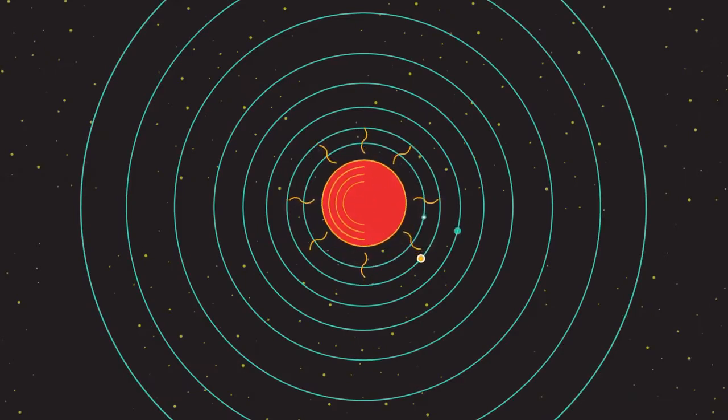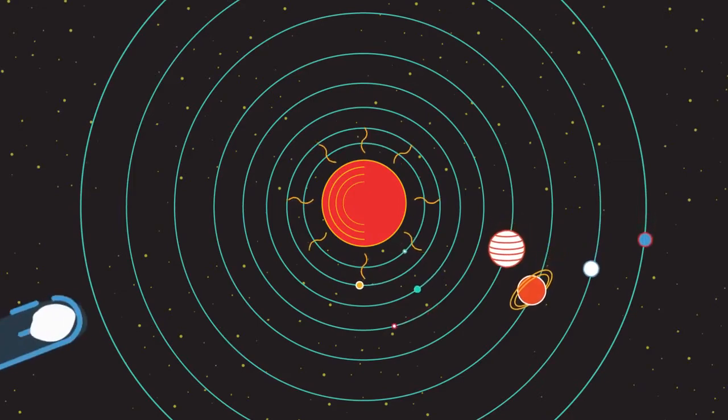This video looks at the characteristics of the outer planets, dwarf planets, moons and comets.